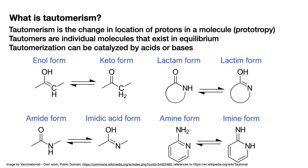Here we can see four key types of tautomers: keto-enol tautomerism, lactam and lactim, amide and imidic acid, and amine and imine forms of tautomerism. In all of these, we have a movement of a proton — usually changing from an alcohol to, for example, a ketone.